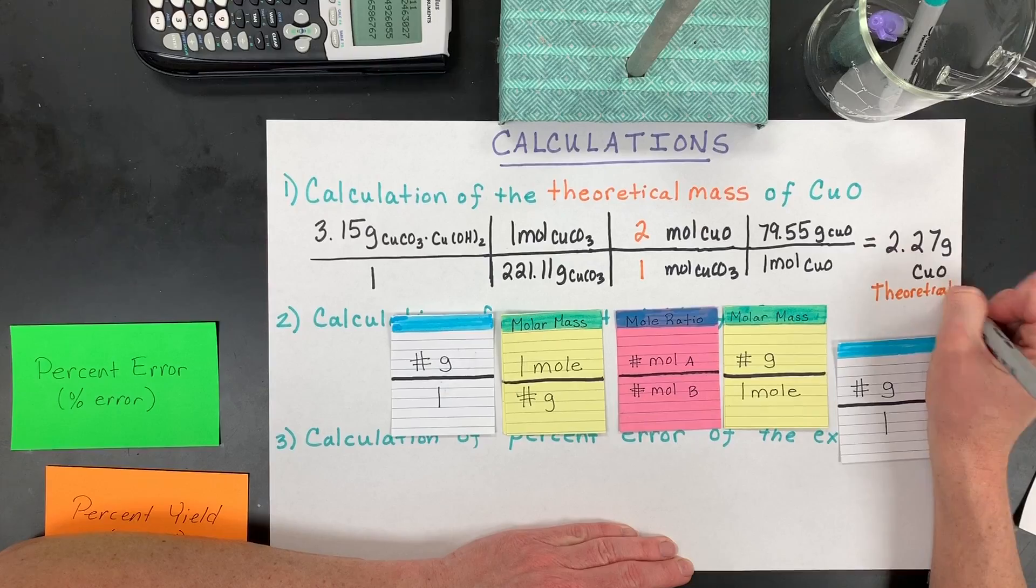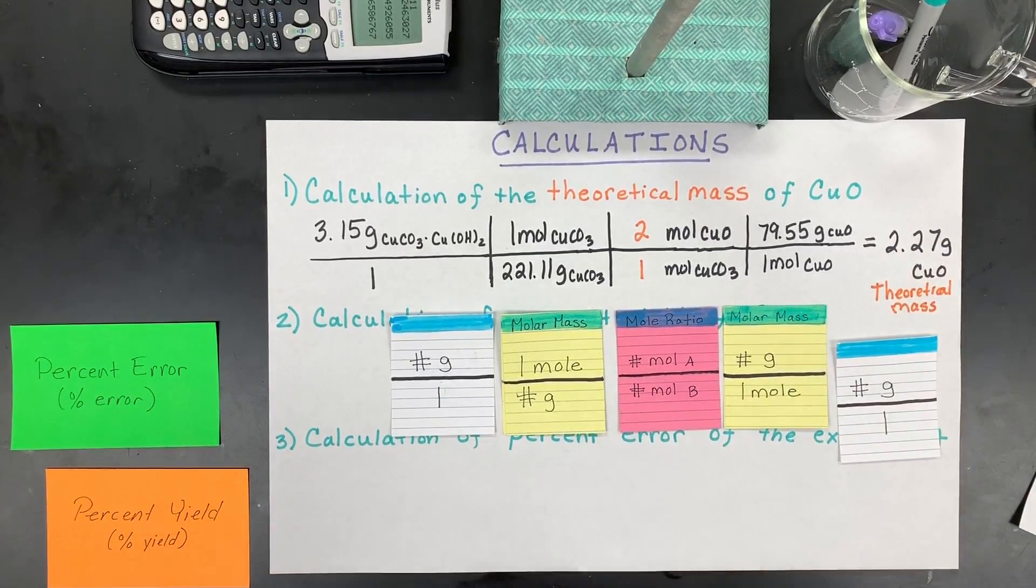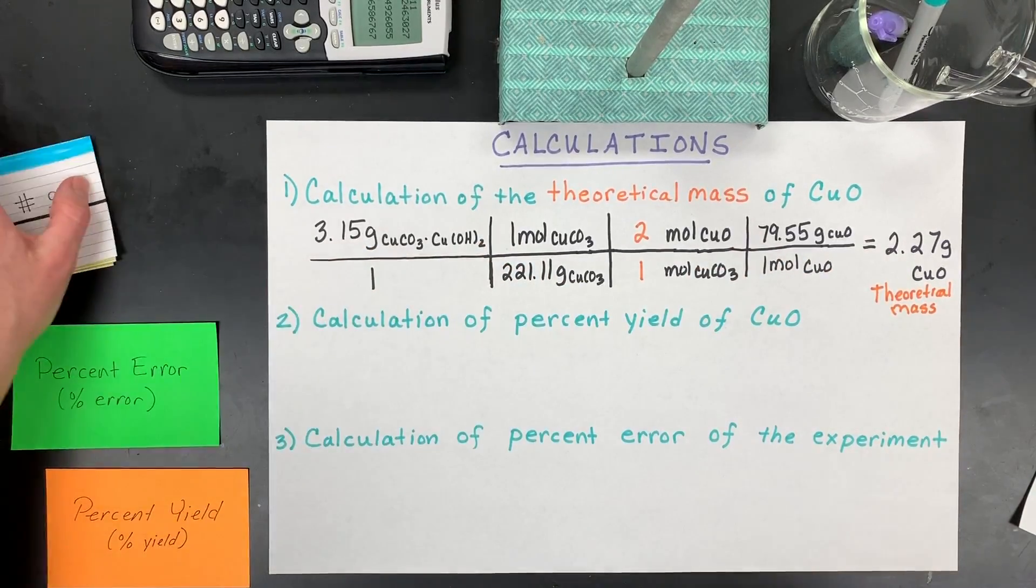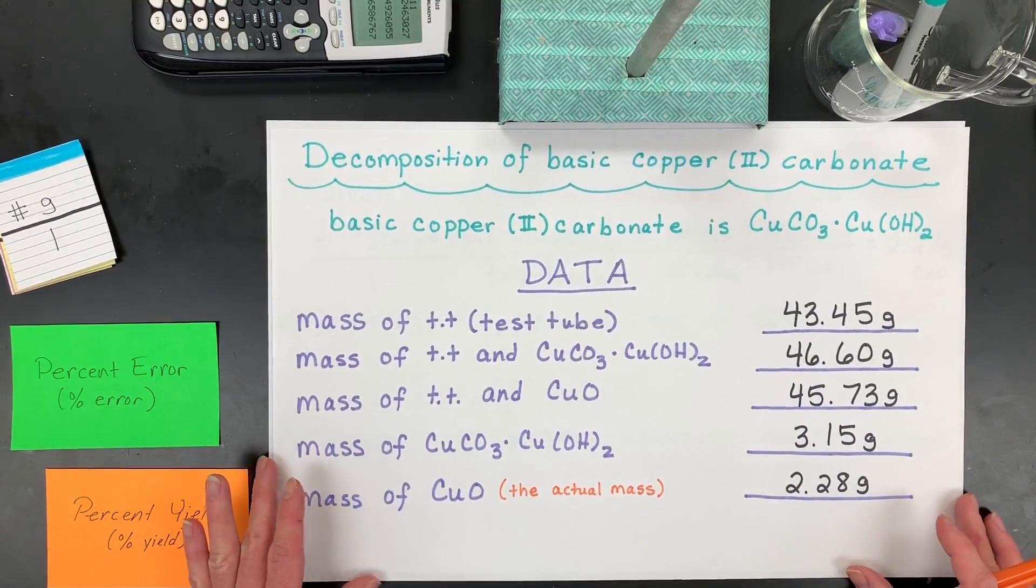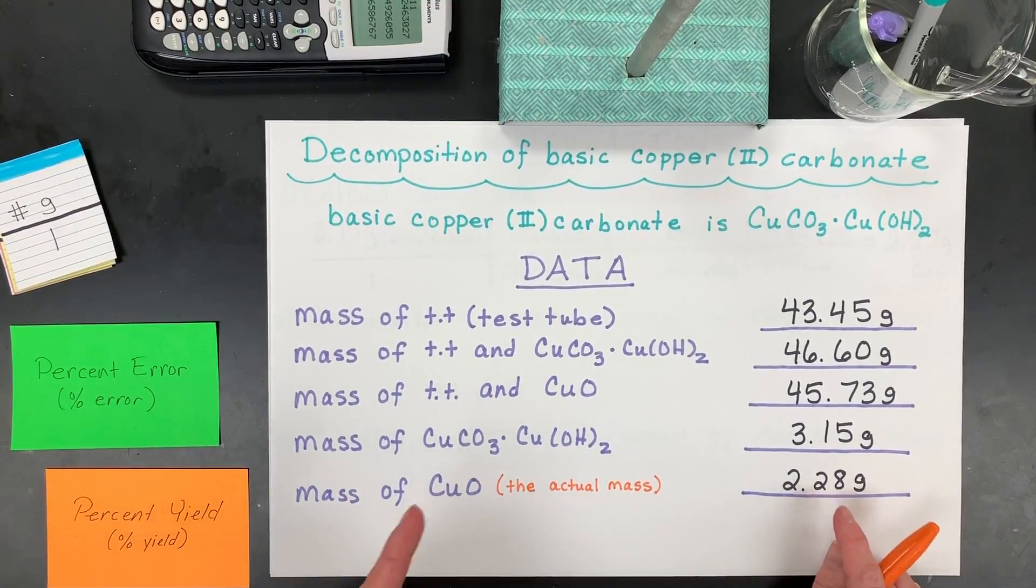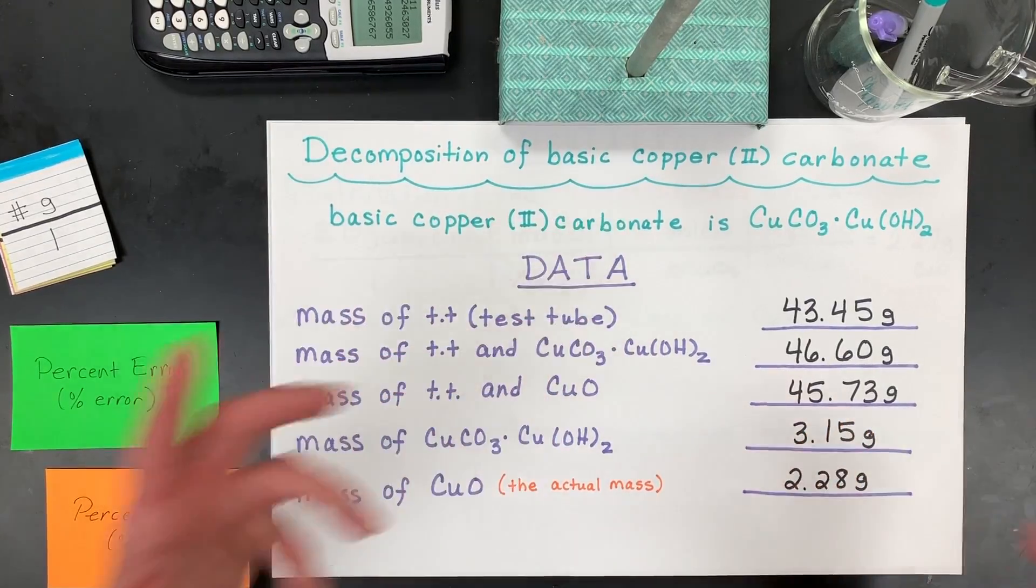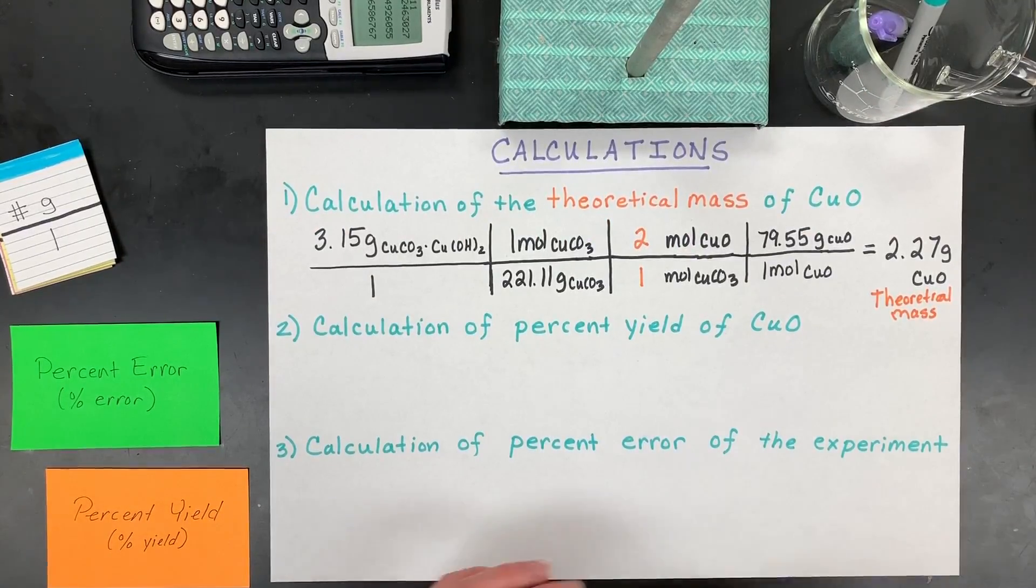Theoretical. That's all living in theory. That's the amount we should get if this works perfect. So in this case, if you look, I actually got more than that by mass. It seems strange, but keep in mind, the molar mass of this basic copper 2 carbonate is actually quite large. So my guess is I probably didn't maybe heat it long enough to drive all that reaction to completion.